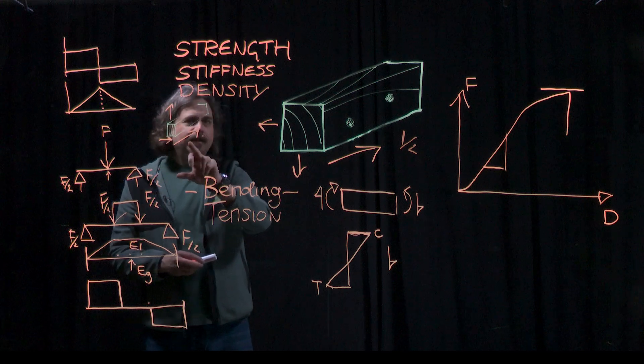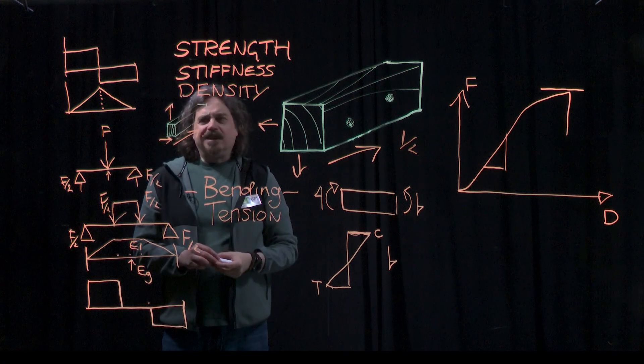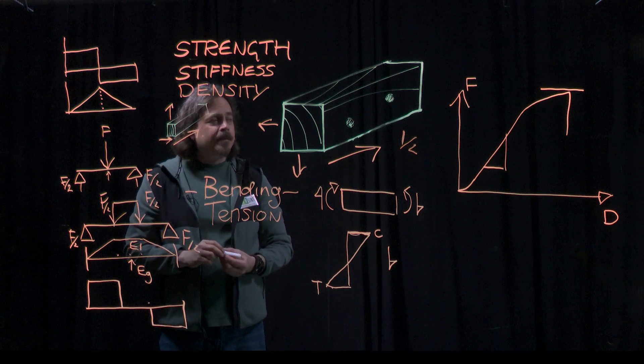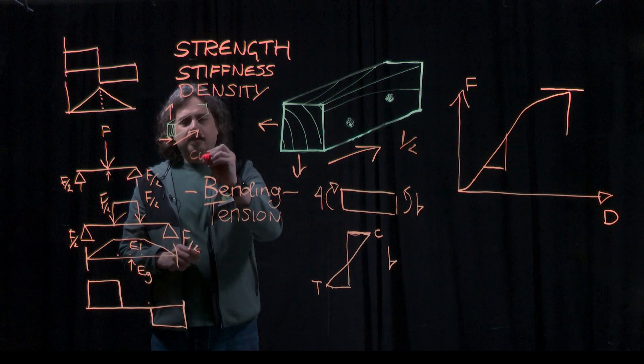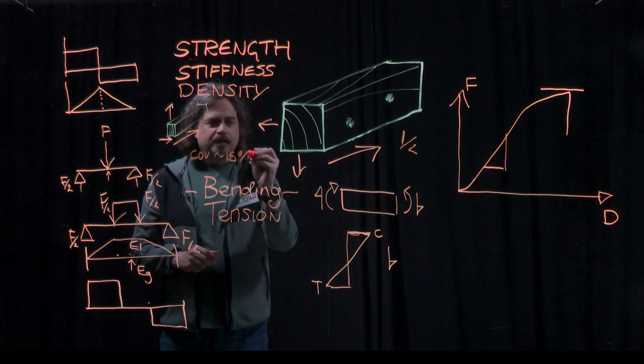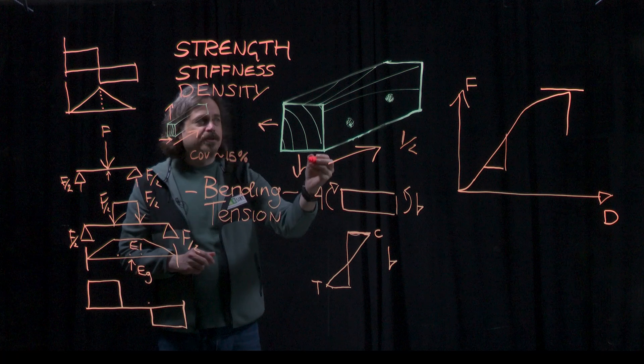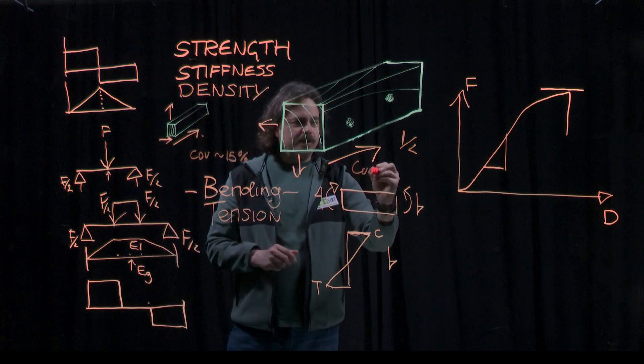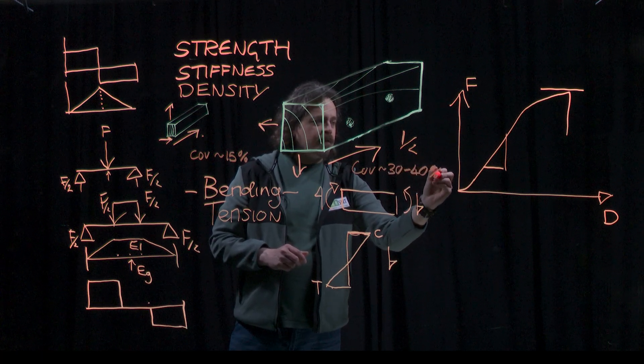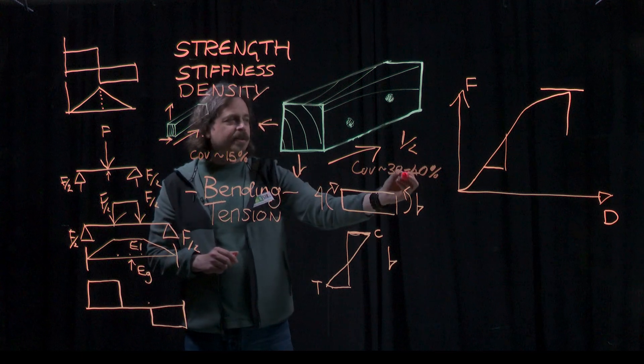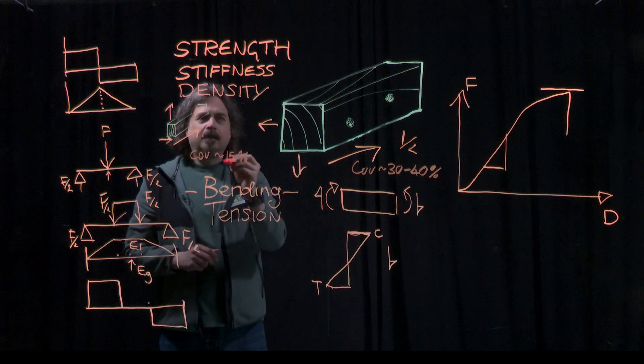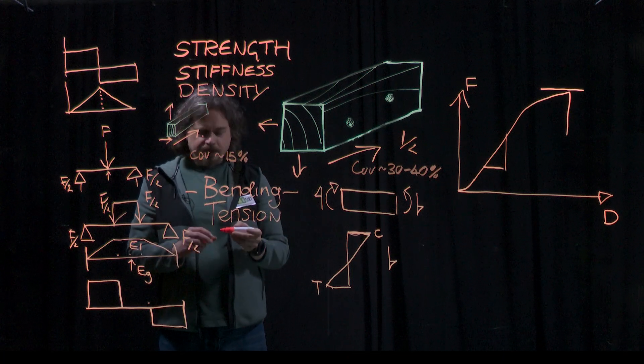So even though we call this small clear, we call it defect-free, it's not really defect-free. There are defects, they're just too small for us to really comprehend. So the coefficient of variation of the strength in a small clear test is typically about 15%. And for a full-size structural test, the coefficient of variation of the strength is typically about 30% to 40%. So there's much more variation as well in the strength values that you get from full-size compared to small clears. But there's still variation in here because of these small things that you can't see within the wood cell wall.